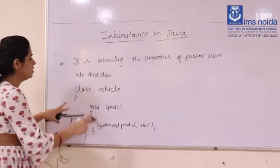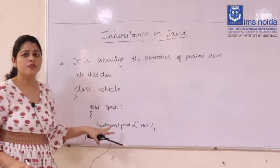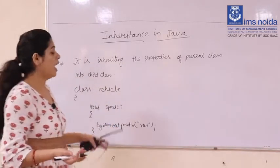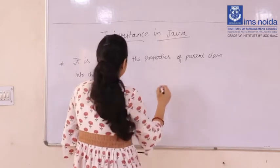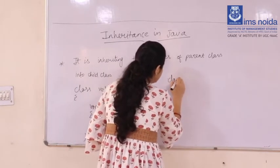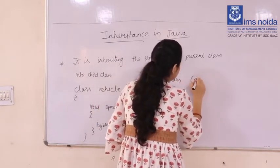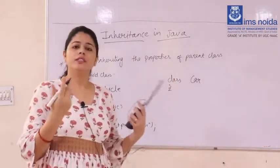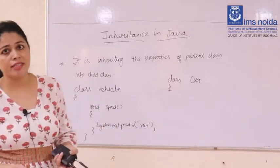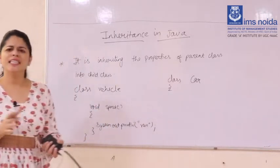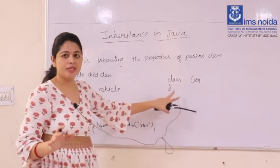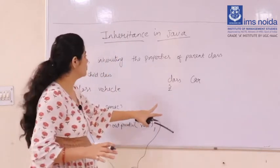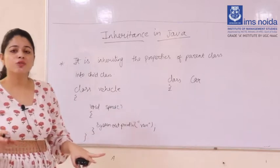Now I am taking another class called Car. Car is a vehicle; a bike can also be a vehicle — any type of vehicle. But I am taking a simple example: class Car. This class also needs a speed method.